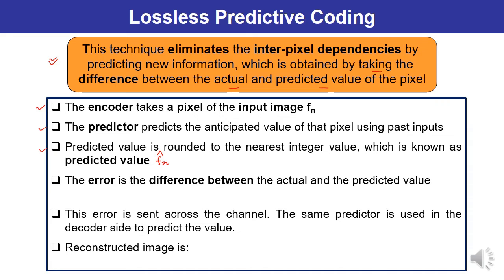The error is the difference between the actual and predicted value, represented as e(n), where e(n) = f(n) − f̂(n). This error is sent across the channel, and the same predictor is used at the decoder side. The reconstructed image can then be written as f(n) = e(n) + f̂(n).